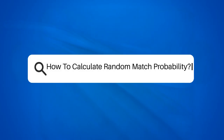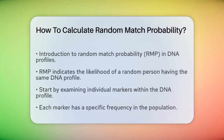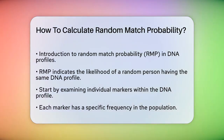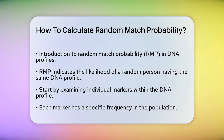How to calculate random match probability. If you're curious about how to determine the likelihood that a DNA profile matches someone randomly, you're in the right place. Let's break down the process step by step. When dealing with DNA profiles, the random match probability, or RMP, is a key concept. It tells us how likely it is that a random person from a population would have the same DNA profile as the one we're examining. To calculate the RMP, you start by looking at the individual markers within the DNA profile.